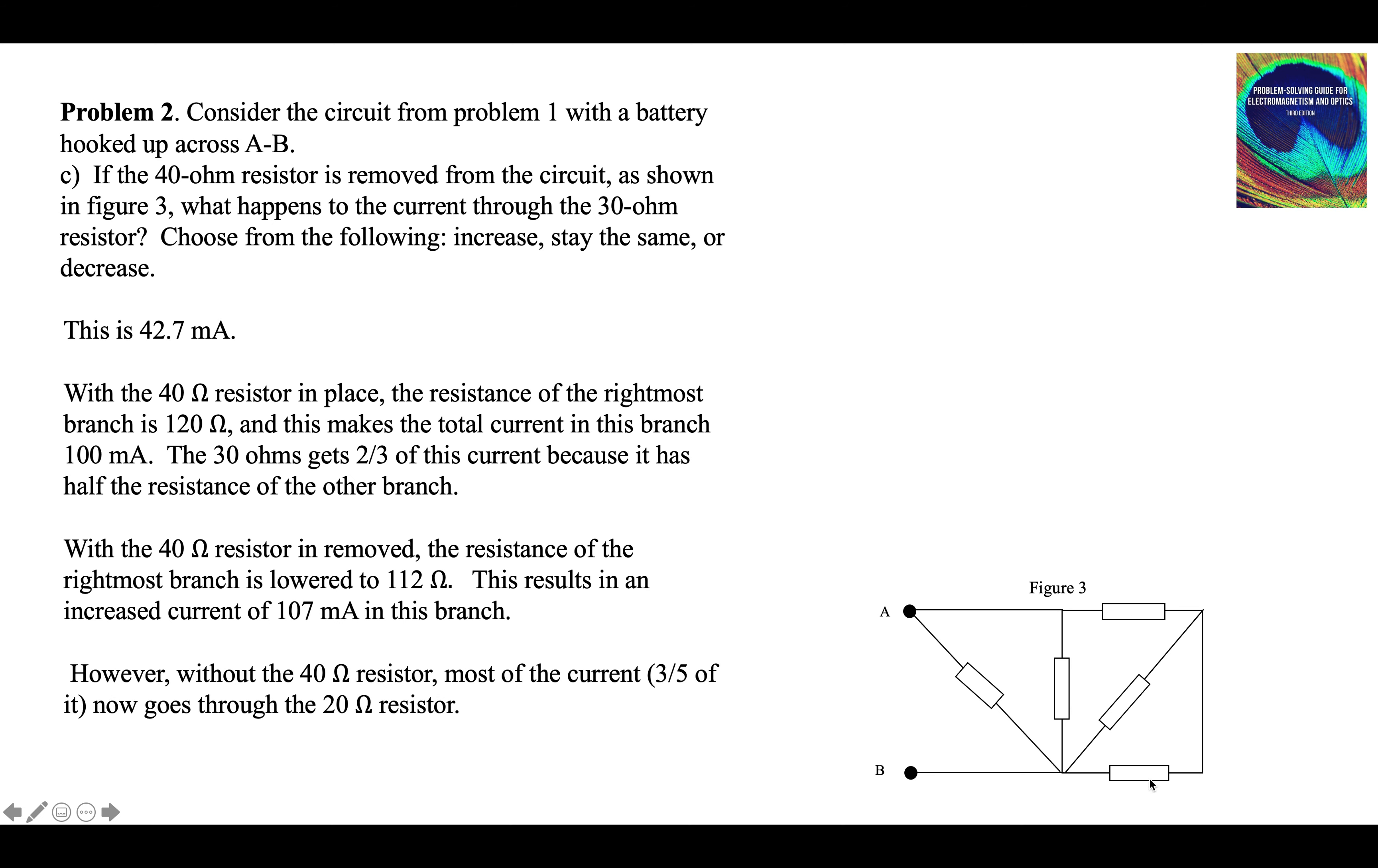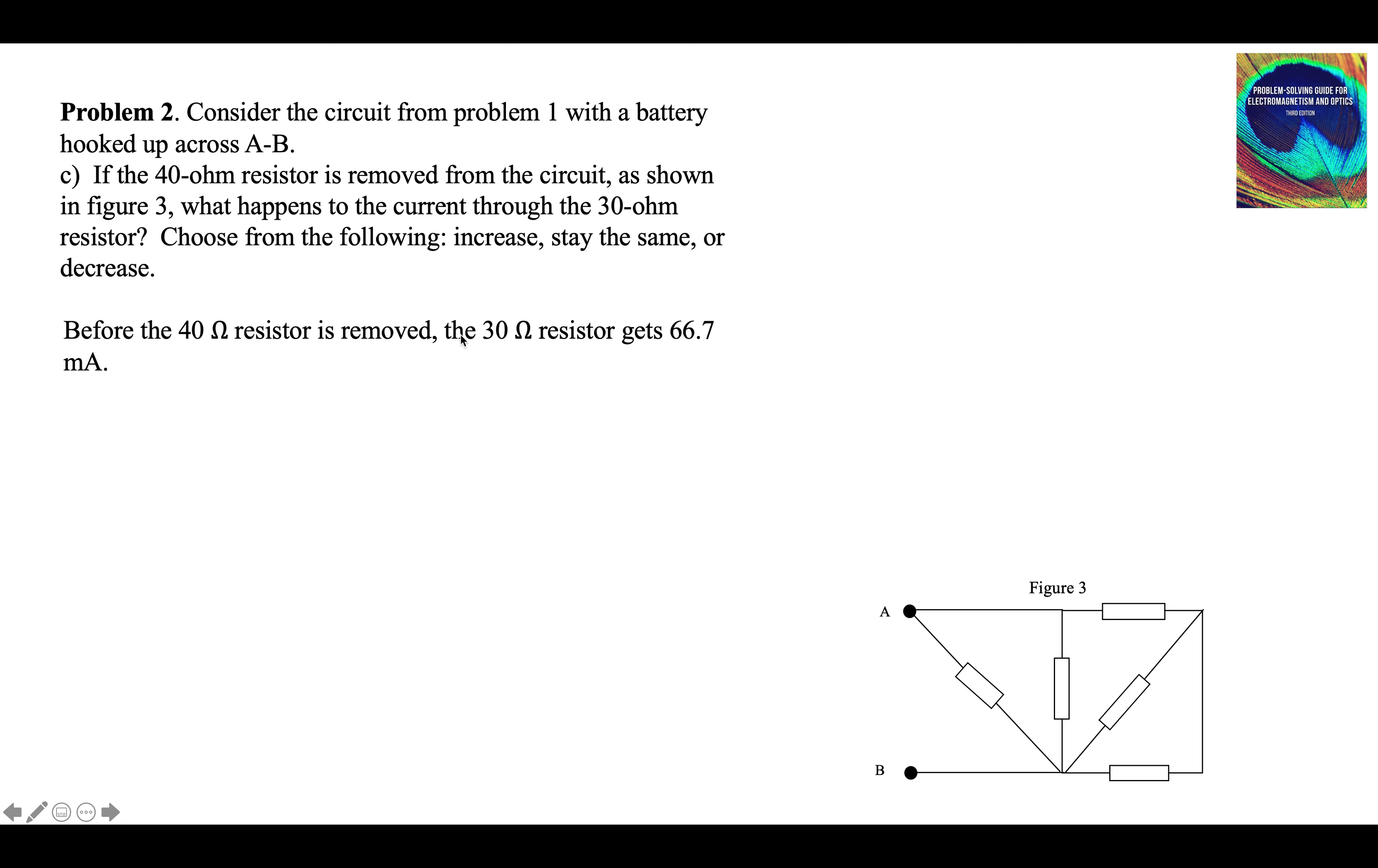But when it splits, most of it goes through the 20 rather than the 30. Before the 40 was removed, we calculated in problem one, the 30 ohm resistor gets 66.7 milliamps. Now it only gets 42.7. The current through the 30 ohm resistor decreases.